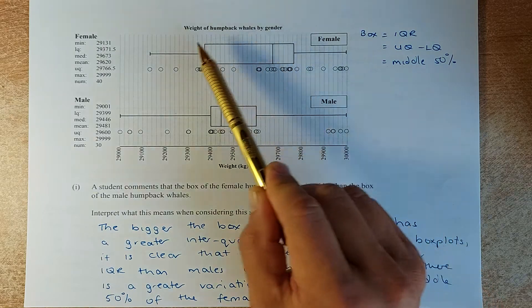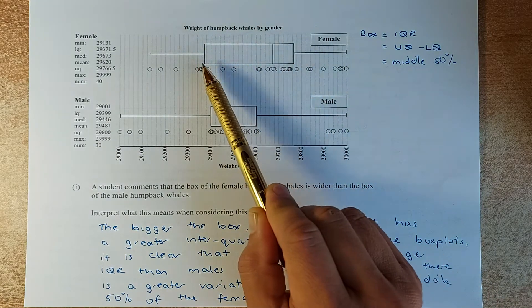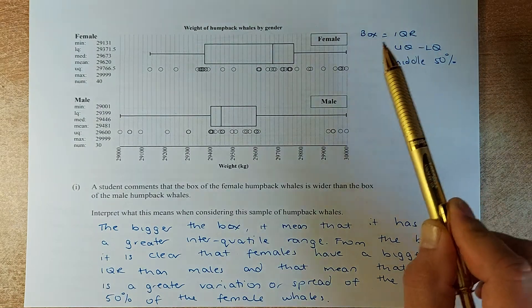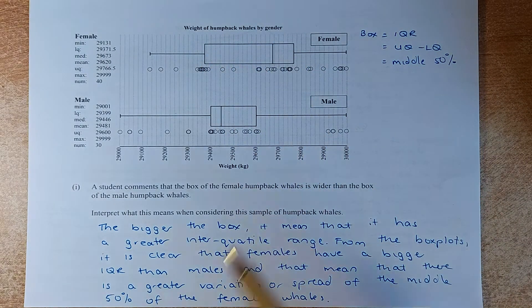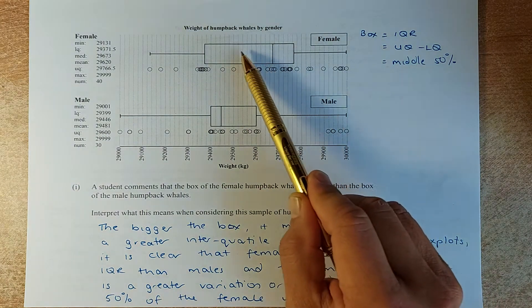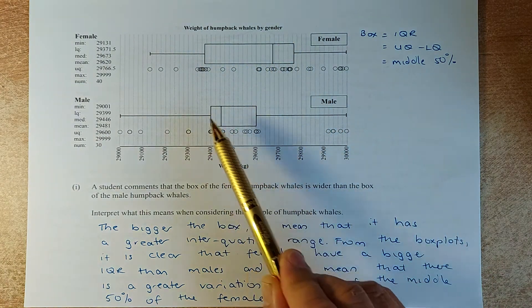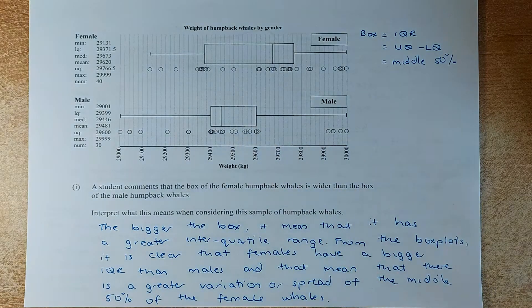If you want to get the box, it's actually the upper quartile minus the lower quartile, and that is called the interquartile range, also called the middle 50%. From the graph, you can see that the female box is definitely bigger than the male box. So what does it mean?